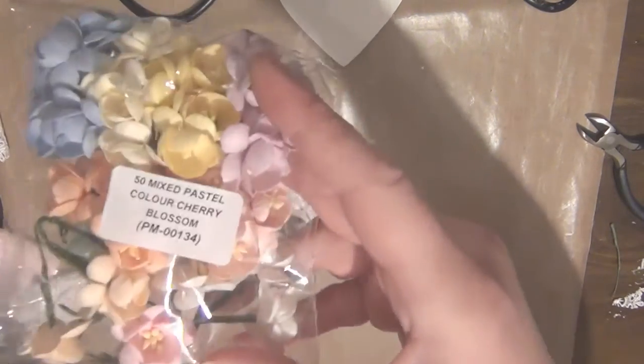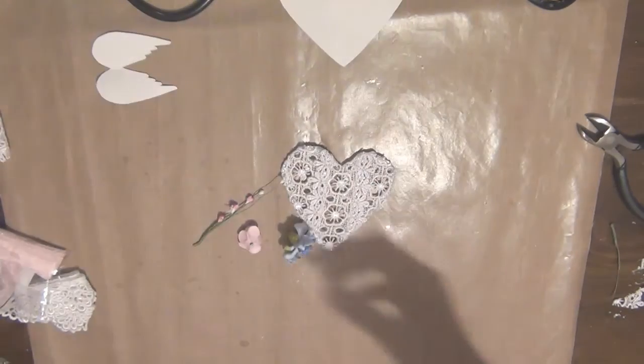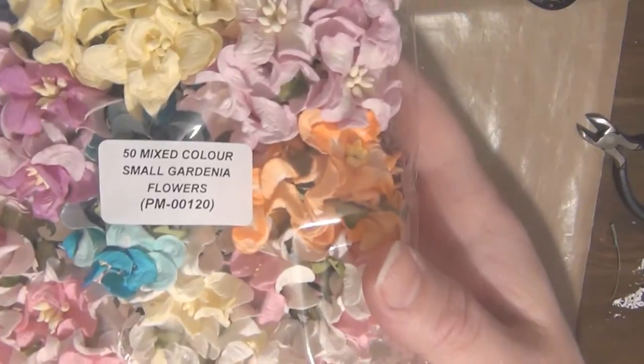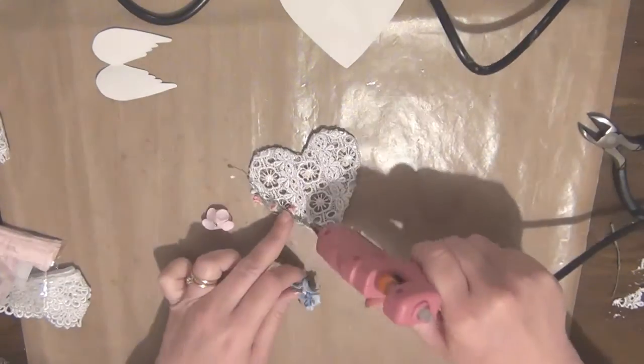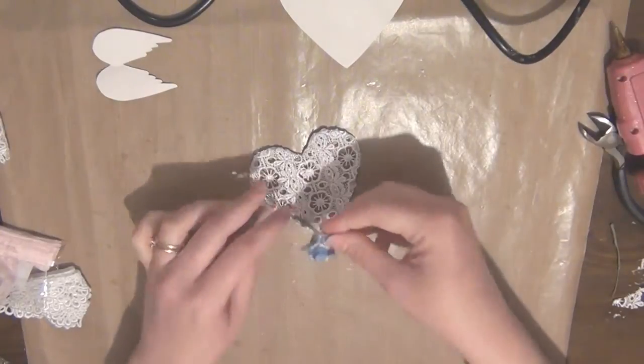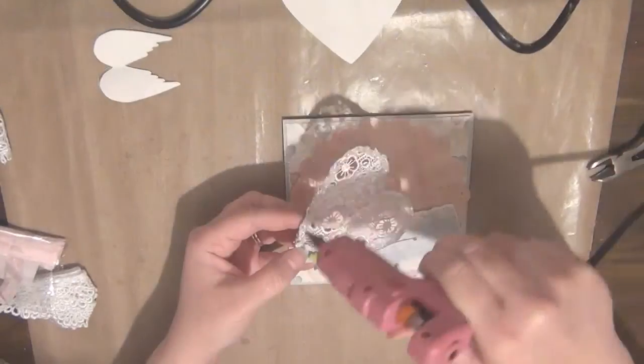But I'm going to be using this on a card. I have the product codes in the description box. I'm just going to place my flowers on the corner of this heart just until I'm happy with how that looks.